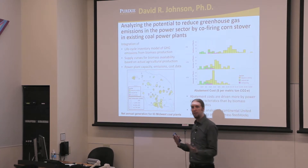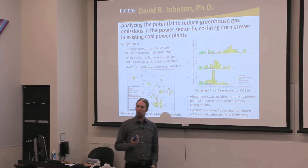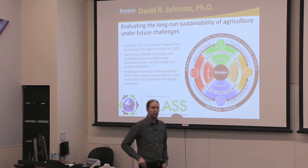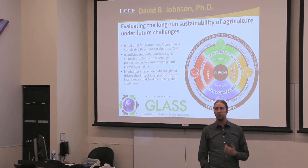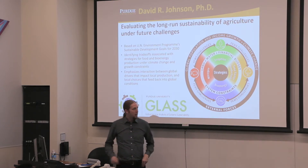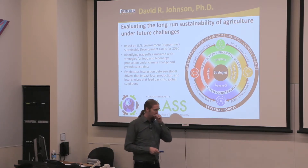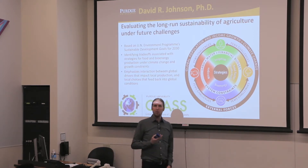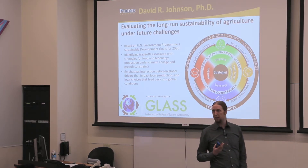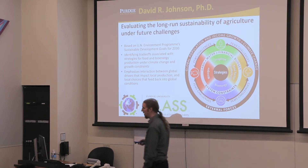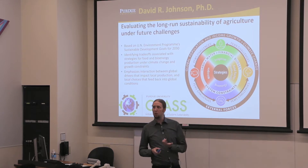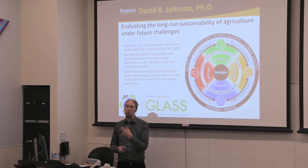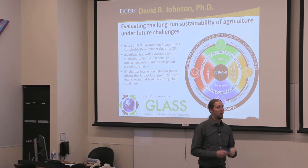We're taking that analysis and expanding it across the entire U.S. and looking at other biomass feedstocks like forest residues. Some other work I do is with agricultural economists here at Purdue as well as climate scientists and hydrologists — a big team known as the Purdue GLASS Institute, which stands for Global to Local Analysis of System Sustainability. We're evaluating the long-run sustainability of agricultural practices in the U.S. under future climate challenges, based on the UN Environment Program's Sustainable Development Goals for 2030, which include roughly 20 goals, about half related to land use, water, food production, or energy.